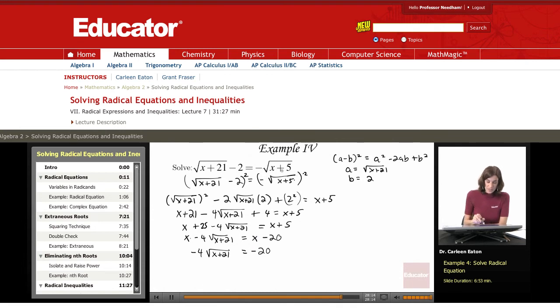Okay, now I've gotten rid of this radical on the right. On the left, I have a radical, but I also have a negative 4 in front of it. So I need to isolate the radical by dividing both sides by negative 4. So this gives me negative 20 divided by negative 4 on the right. So the square root of x plus 21 equals 5.